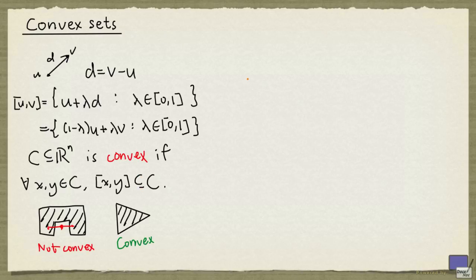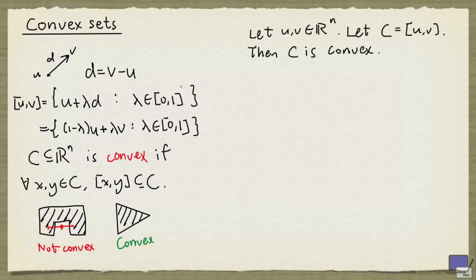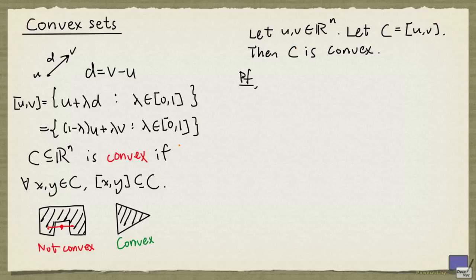What we're going to do now is to show that the line segment between two points is a convex set. In R2 and R3, this is perhaps clear, because if you take a line segment between U and V and pick any two points on it, the line segment clearly contains the line segment between the two points you pick. But that is just a proof by picture, and it's not a rigorous way to establish this. So what we need to do is go through the algebra and show that the condition for being convex is satisfied.